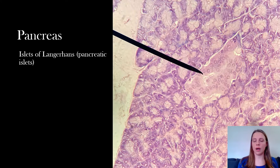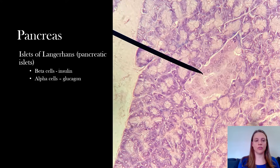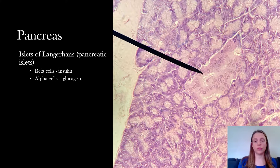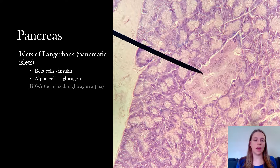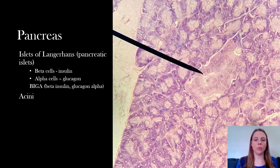In the pancreas you can see this big pink pond of tissue that the pointer is on — that is an islet of Langerhans, also known as a pancreatic islet. These islets have two types of cells: beta cells which produce insulin, and alpha cells which produce glucagon. You can remember this with the mnemonic: big B, beta, insulin; glucagon, alpha.